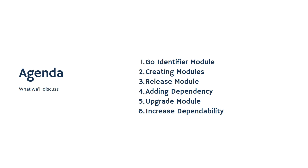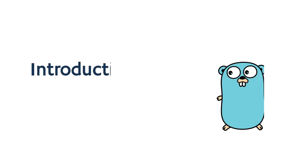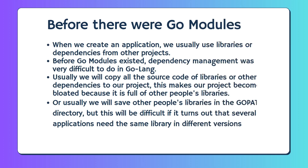Here's the agenda we'll cover while learning Go modules. Before Go modules existed, when we create an application, we usually use libraries or dependencies from other projects. Dependency management was very difficult to do in Go. Usually we would copy all the source code of libraries or other dependencies to our project, making our project bloated. Or we would save other people's libraries in the GoPath directory, but this is difficult if several applications need the same library in different versions.